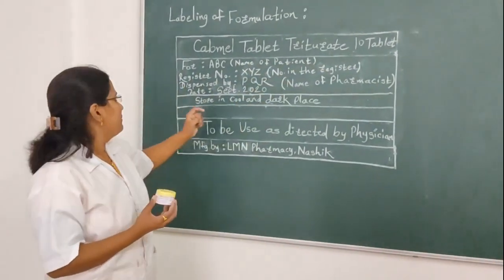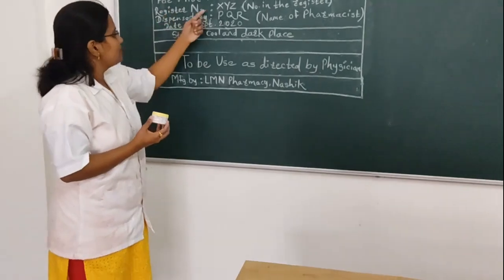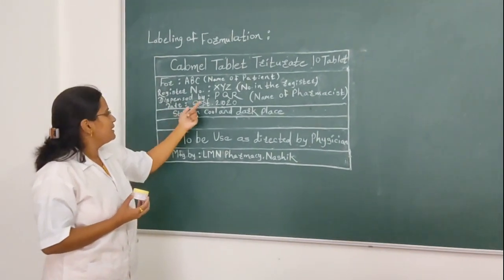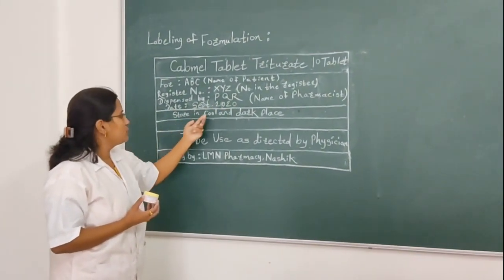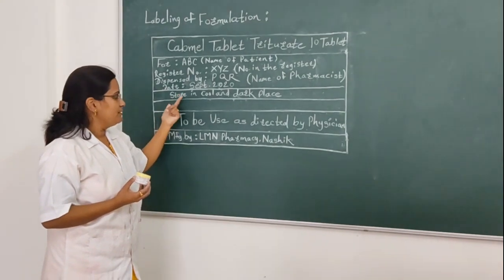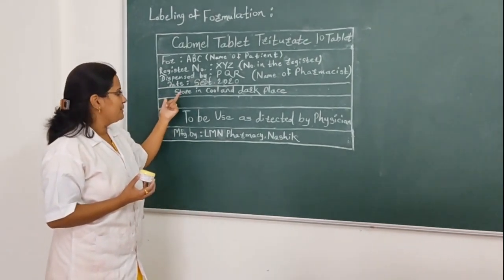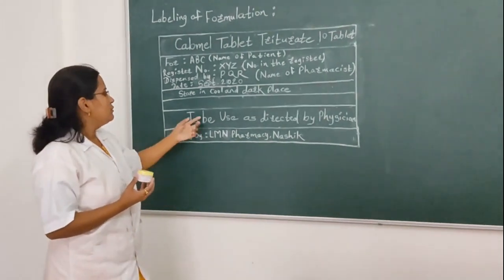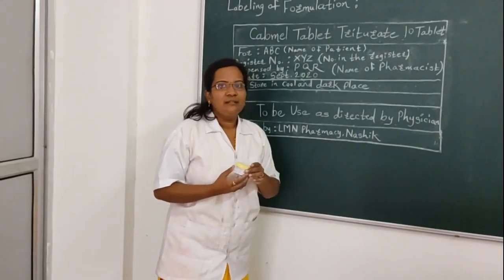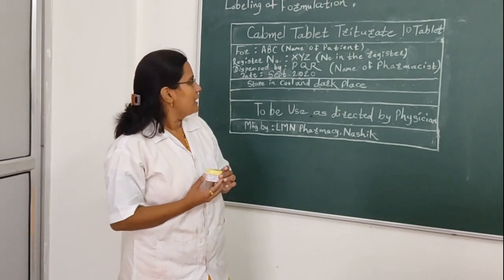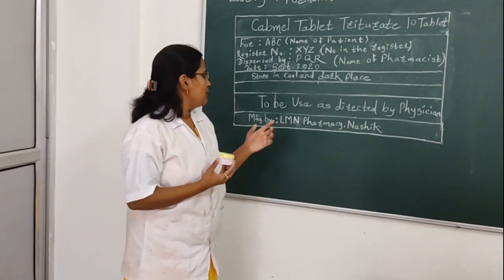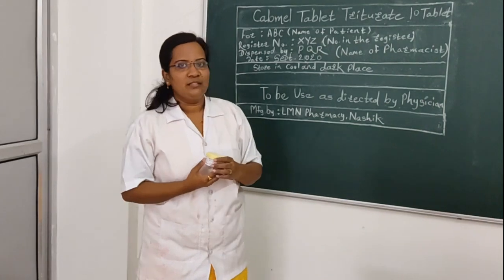Label for Calomel tablet triturate for 10 tablets: patient name ABC, register number XYZ, dispensed by KQF (pharmacist name), manufactured September 2020, storage condition: cool and dark place. The tablet triturate is wrapped in paper and submitted in a white-board bottle, to be used as directed by physician. Manufactured by Calomel Pharmacy. The 10 tablets of Calomel tablet triturate are submitted in this white-board bottle for inspection with special instructions on the label.